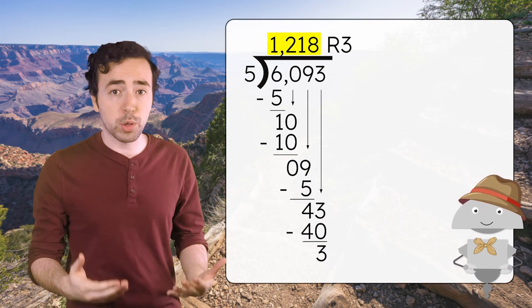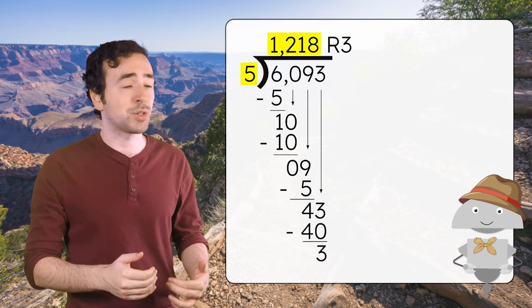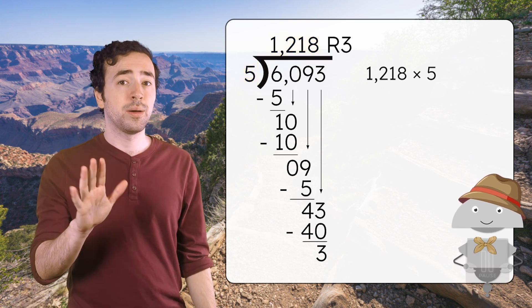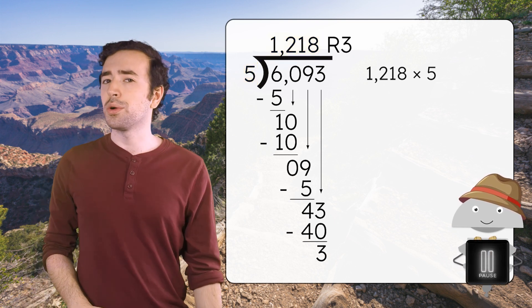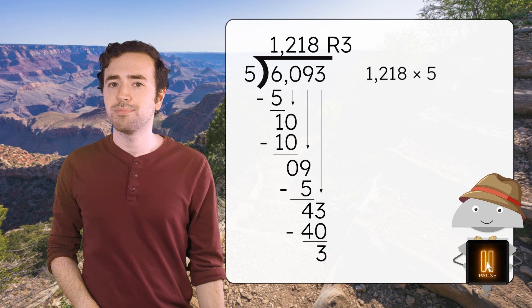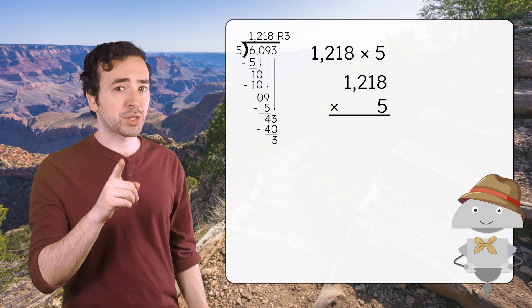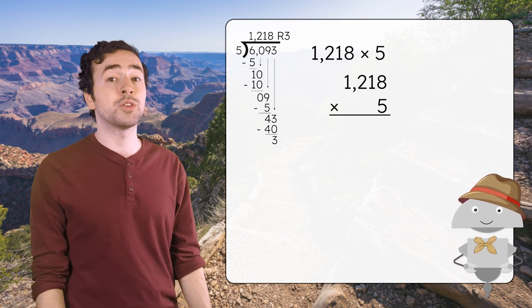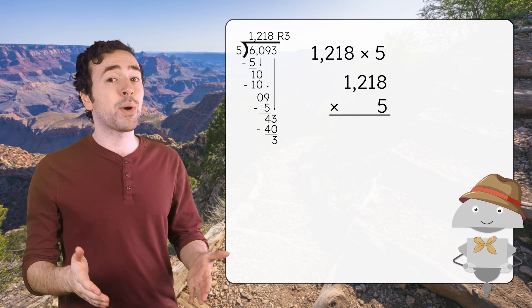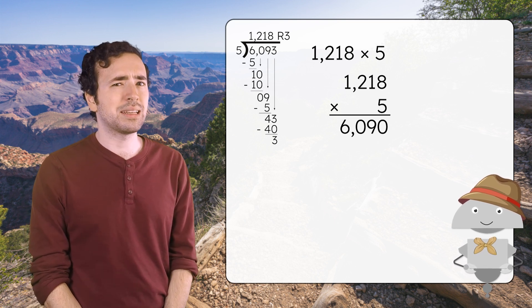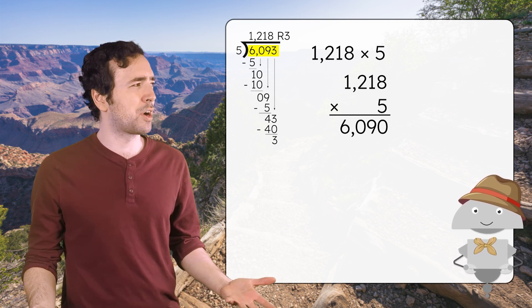We'll multiply our whole number quotient times the divisor. So 1,218 times five. Pause the video here to solve and record your thinking. I used the multiplication algorithm to solve five times 1,218, and I got a product of 6,090. But that isn't the same as the dividend we started with.